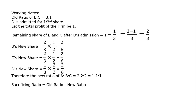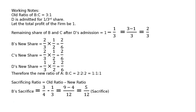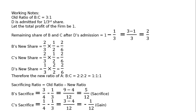Sacrificing ratio equals old ratio minus new ratio. B's sacrifice: old share 3/4 minus new share 1/3 = LCM 12, giving 9 minus 4 = 5/12 sacrifice. C's sacrifice: 1/4 minus 1/3 = LCM 12, giving 3 minus 4 = minus 1/12, which is a gain. Hence, C will not receive anything from goodwill; instead, C's capital account has to be debited for this share of gain while D is being admitted.